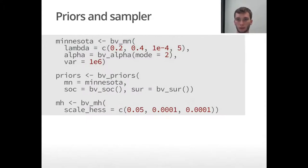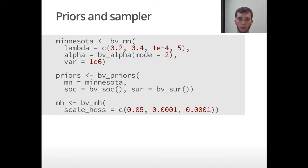As Nikolas already mentioned, the Minnesota prior is always included as a baseline, and with the function bv_mn we can set up its hyperparameters. For this example we chose to treat only lambda, the tightness parameter, hierarchically, while alpha is fixed to its mode and not treated hierarchically. The resulting object can be passed to the function bv_priors, which collects all priors. There we also add the sum of coefficients prior as well as the single unit root prior, which are useful when dealing with non-stationary data. As a last step we adjust the Metropolis-Hastings step to achieve an acceptable acceptance rate and ensure convergence of our hyperparameters.